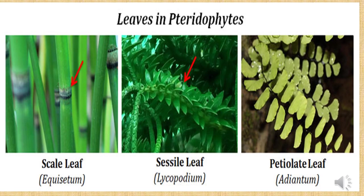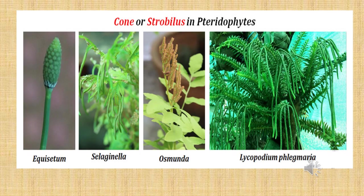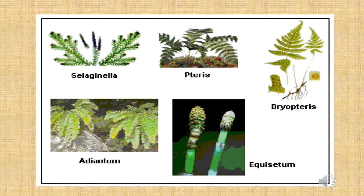Looking at some examples: Equisetum has a scale-leaf-like structure, Lycopodium has a scale-leaf-like structure, and Adiantum is also an example of a pteridophyte. Examples where cones or strobili are formed in pteridophytes include Equisetum, Selaginella, Osmunda, and Lycopodium. Further examples include Selaginella, ferns, Dryopteris, Adiantum, and Equisetum.